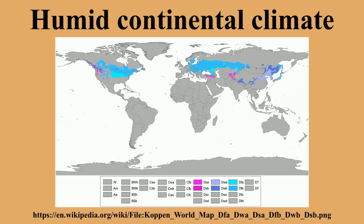Many climatologists in the U.S. prefer to use 0 degrees Celsius as the standard because they feel it better reflects consistency in regional landscapes. The 10 degrees Celsius average temperature was found to be the minimum temperature necessary for tree growth. Large temperature ranges are common within this climate zone.